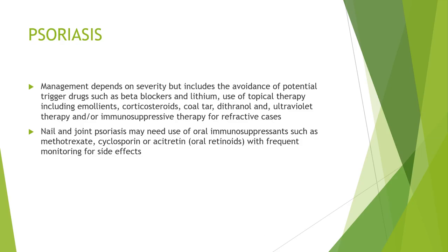The treatment of psoriasis depends on its severity. This includes avoidance of potential triggers such as drugs like beta-blockers and lithium. Additionally, topical therapy may include emollients, corticosteroids, and coal tar. Sometimes ultraviolet therapy and immunosuppressive therapy are needed for non-responders. For nail and joint psoriasis, oral immunosuppressants such as methotrexate, ciclosporin, and oral retinoids may be required, with frequent monitoring for side effects.